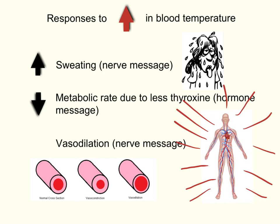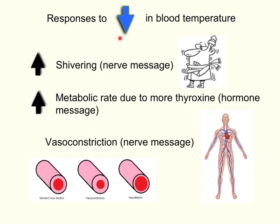To summarise those responses to heat: sweating is caused by a nerve message, as is vasodilation — both controlled by nerve messages. The change in metabolic rate is caused by a hormone message, and that hormone is thyroxine. Now for the responses to a decrease in blood temperature — when we're too cold. Instead of sweating, we shiver. Shivering is controlled by a nerve message and is basically the rapid relaxation and contraction of the skeletal muscles. Through that relaxing and contracting, heat is produced, which warms us up and increases our blood temperature — negative feedback to the original stimulus of decreased blood temperature.